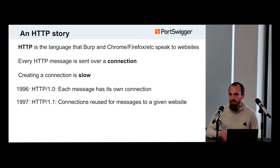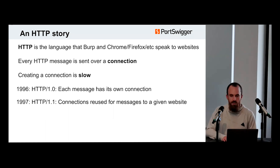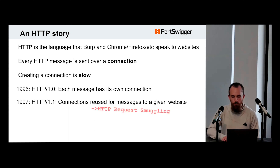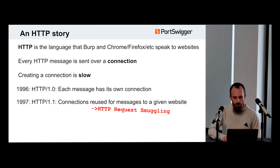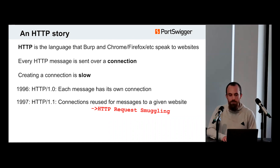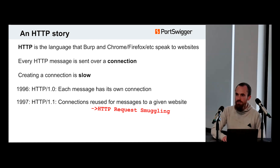That was formalized in HTTP 1.1 in 1996, and it definitely made things faster. But it also introduced a terrible vulnerability called request smuggling, which has been making hackers happy ever since. We've been using HTTP 1.1 for a long time — a large portion of the web still uses 1.1 and is still vulnerable to request smuggling.